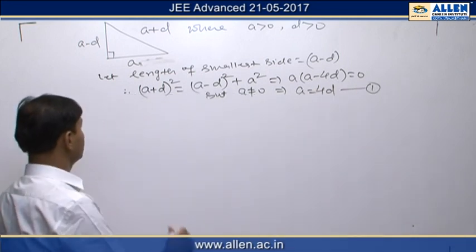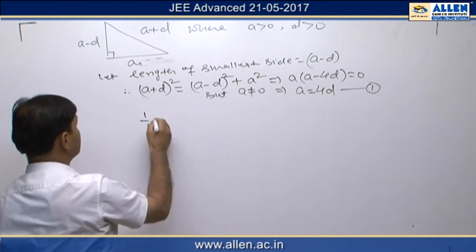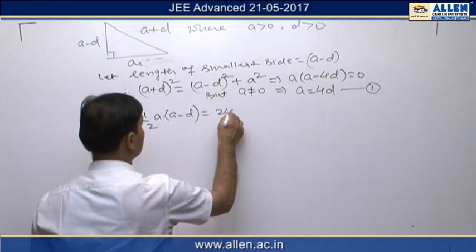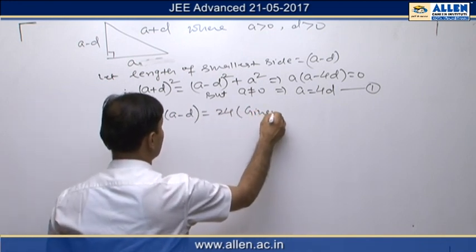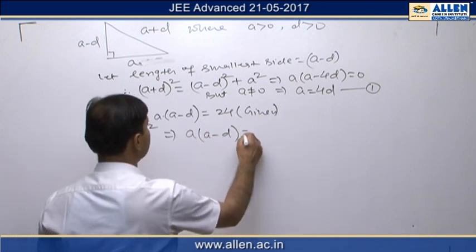Now for another relation, we are given that the area of the triangle, which is (1/2) × a × (a - d) = 24. From there we can conclude that a(a - d) = 48.